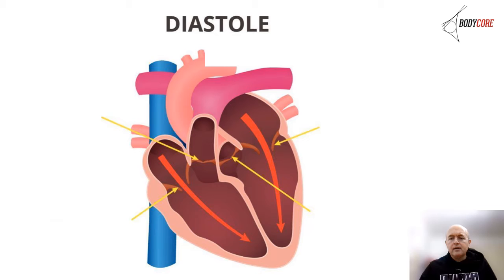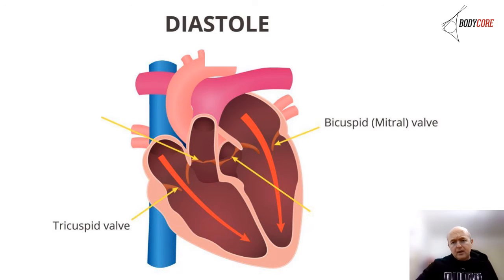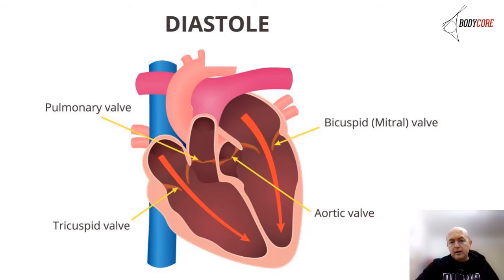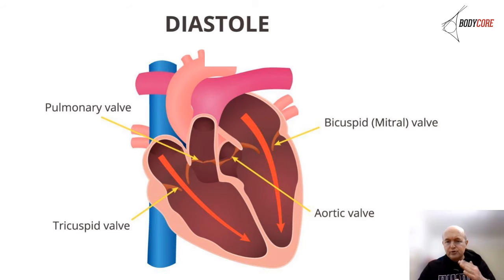Now we're going to look at the cardiac cycle. The first part is diastole — this is where the heart is more relaxed. The tricuspid valve on the right side is open and the bicuspid valve is open on the left, allowing blood to fill into the ventricles.